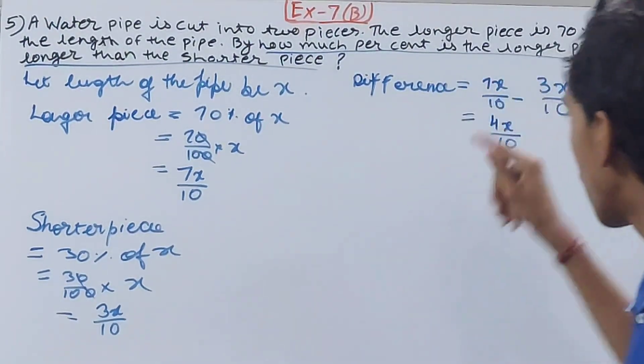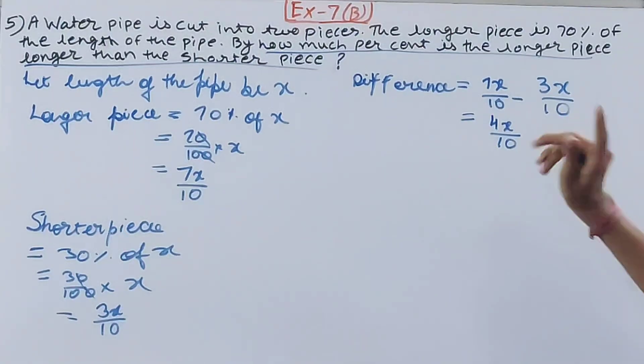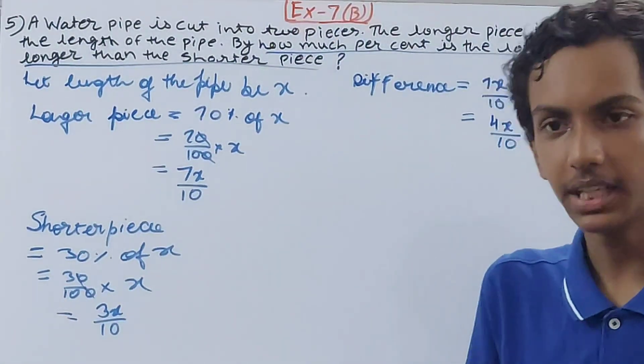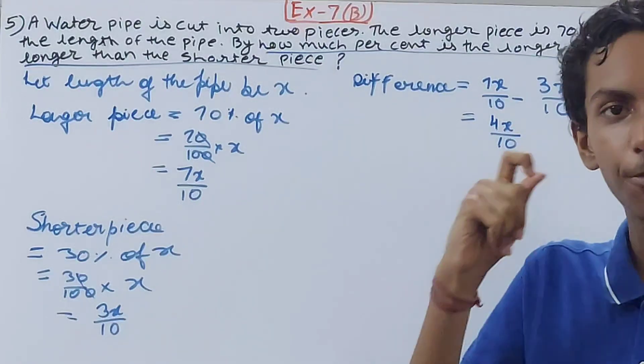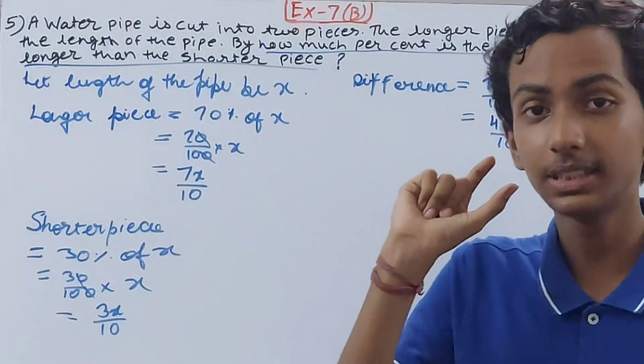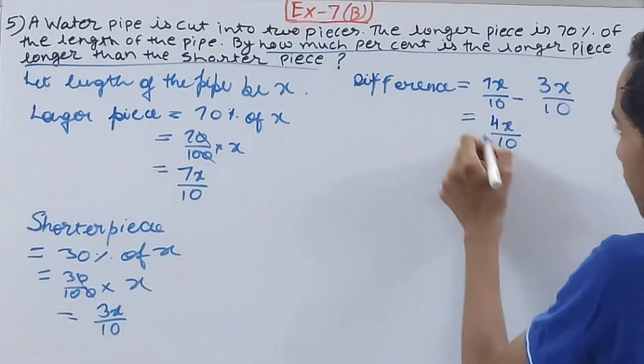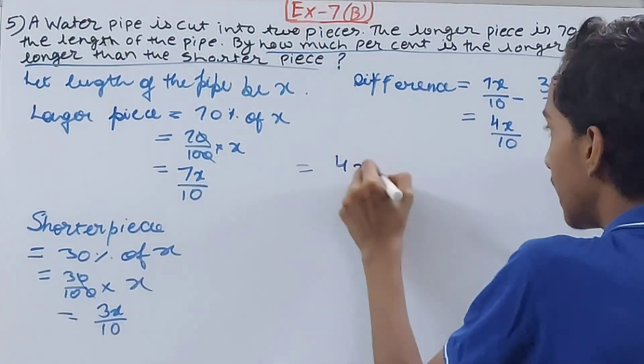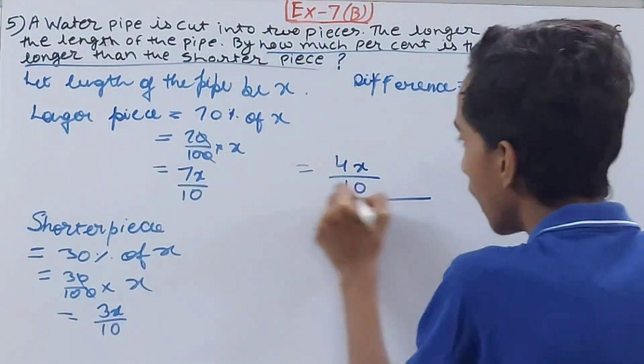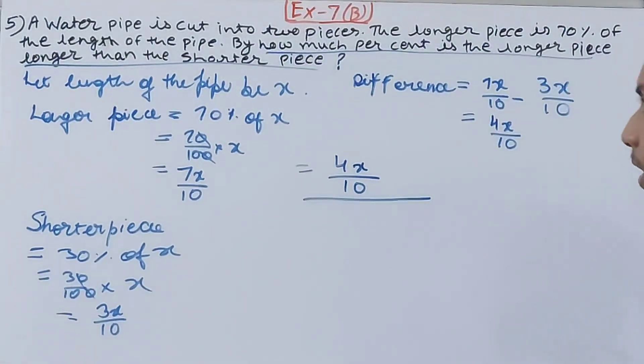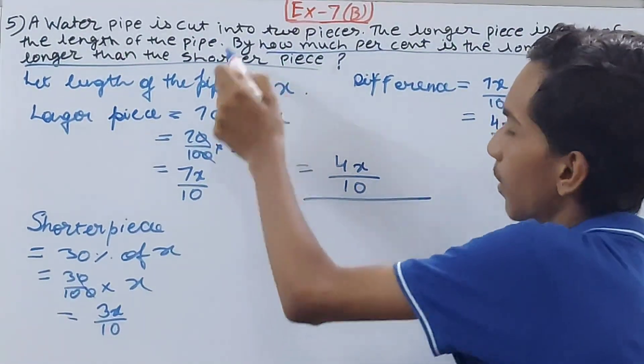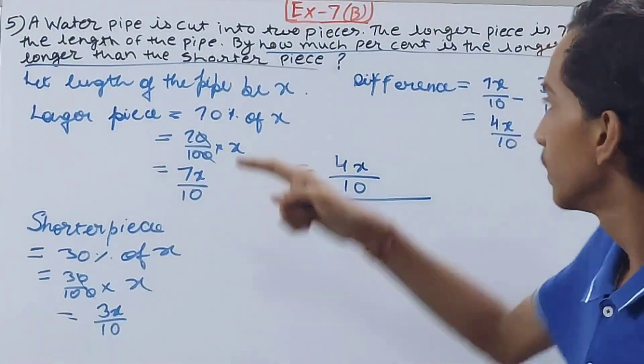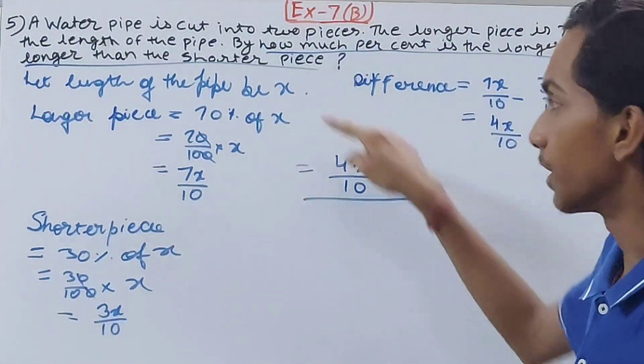This is the actual value and we have to make this into percentage. Always remember, first of all we write down whatever is the change in the quantity. Here 4x/10 we have taken as the difference of length. So first you write down 4x/10 in the numerator. Divide this with what is written in the very end: whatever quantity is written in the very end of this question, that we will put in the denominator.